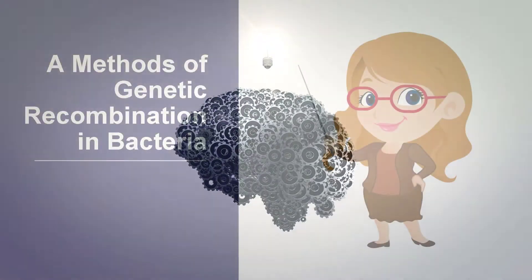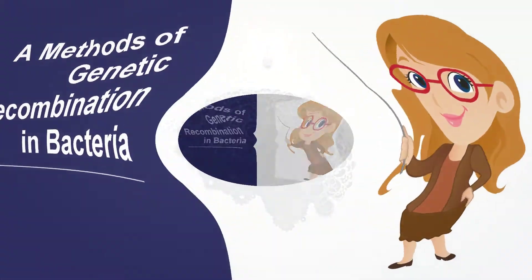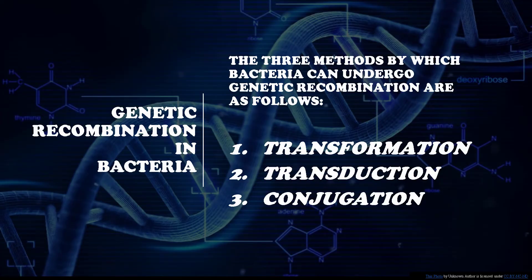Methods of genetic recombination in bacteria. There are three methods by which bacteria can undergo genetic recombination: transformation, transduction, and conjugation.